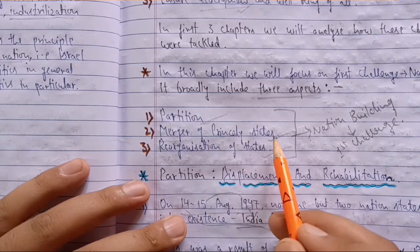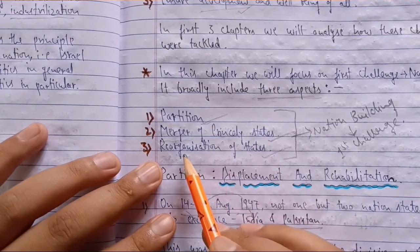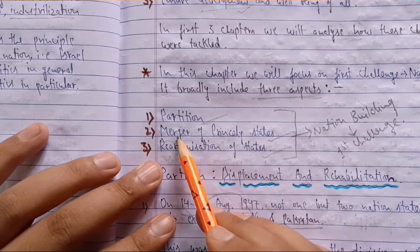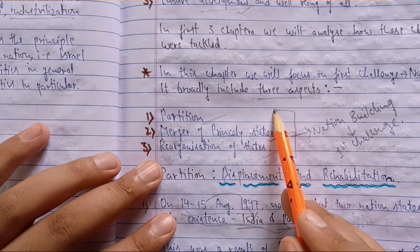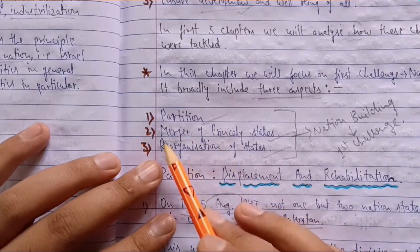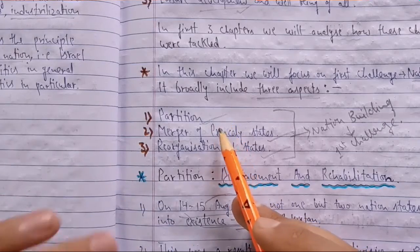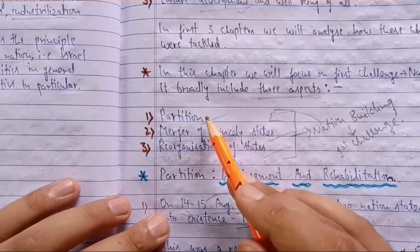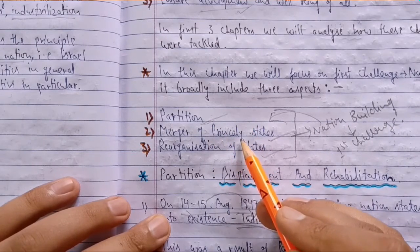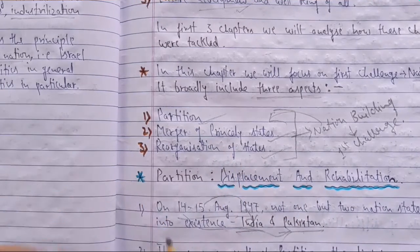Today we are going to do the merger of princely states, or integration of princely states with the Indian union. The last point will be reorganization of states, but we shall take only the merger of princely states today. We are covering three topics under the chapter Challenges of Nation Building, under the first challenge of nation building, and today I am taking the second topic.